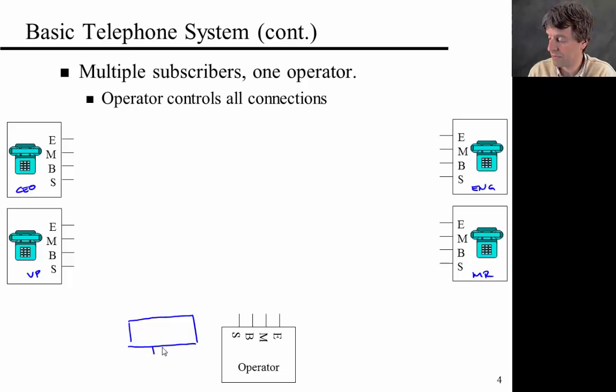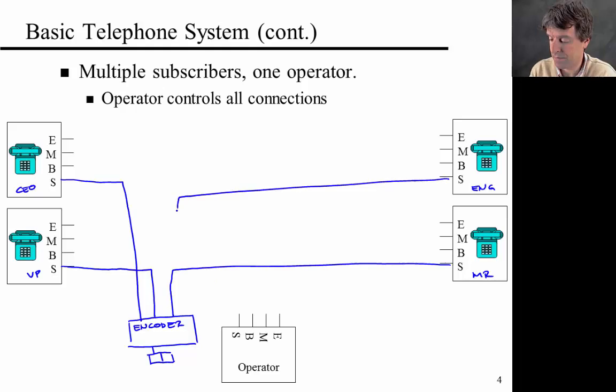So let me draw that here. So this is an encoder. It's a device that takes multiple wires in. So all of the start buttons are connected here to this encoder.